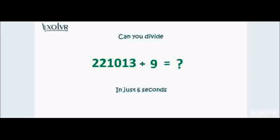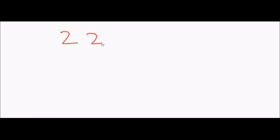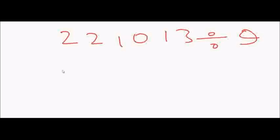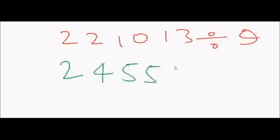Maybe or not, so let's go to the trick now. We have the number which is 2 2 1 0 1 3, and we have to divide it by nine. Let me first write the answer, which I think should be 2 4 5 5 6 and... it is 7. Okay, so let's see how I have done this.